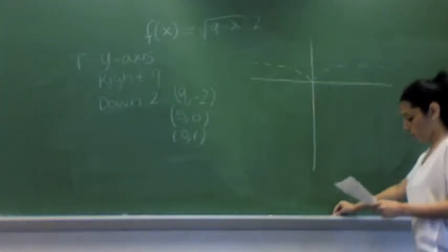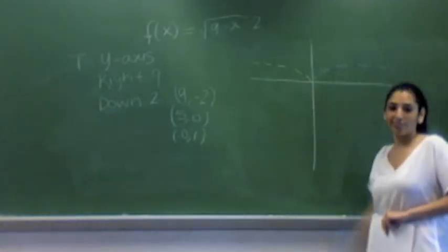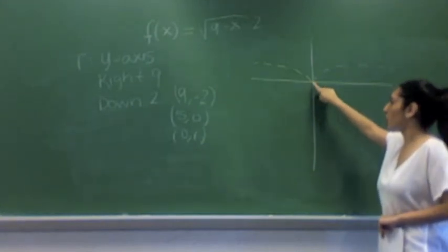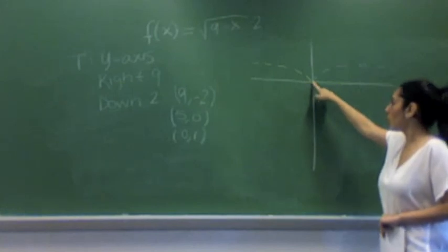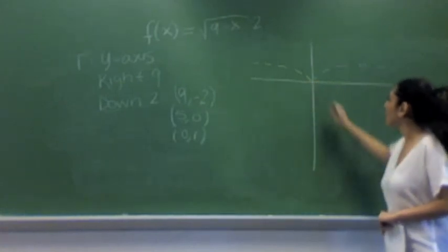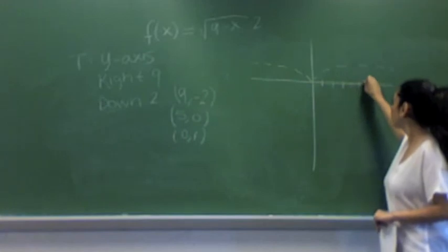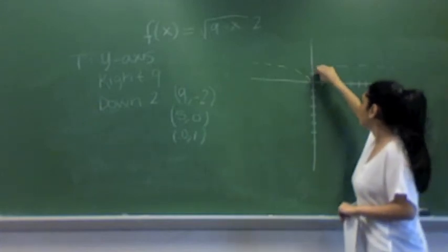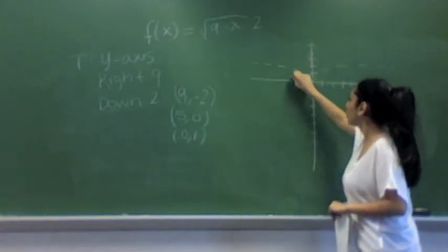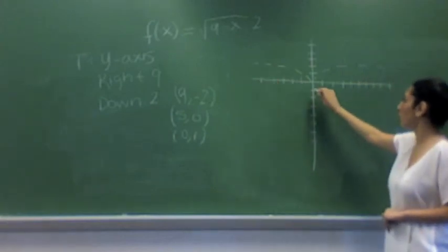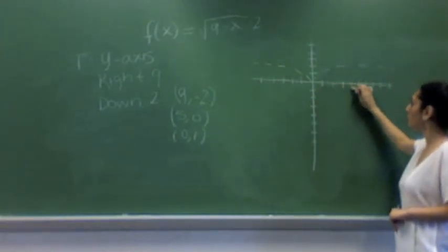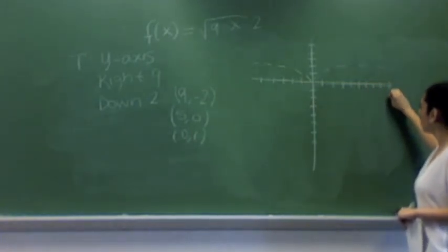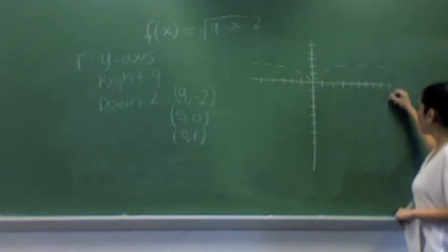After that, we will plot our right and our down 2. So you start off using the point of origin, which is our guiding point, which is 0, 0. You want to go 9 spaces right, 1, 2, 3, 4, 5, 6, 7, 8, 9, and down 2 spaces. So that would be your first point.